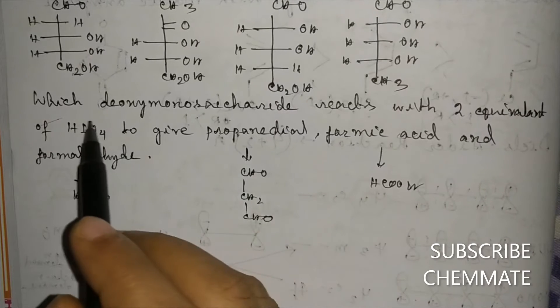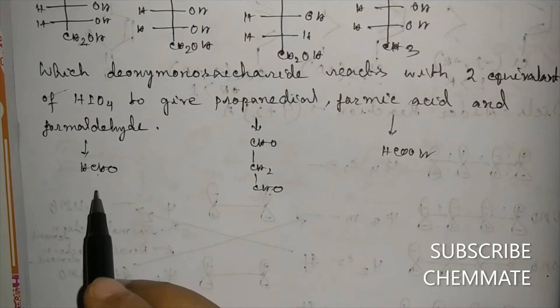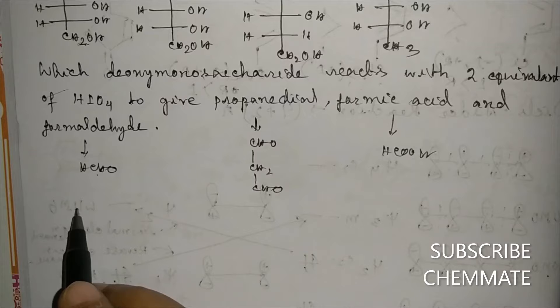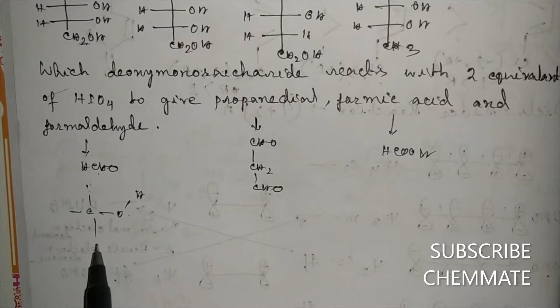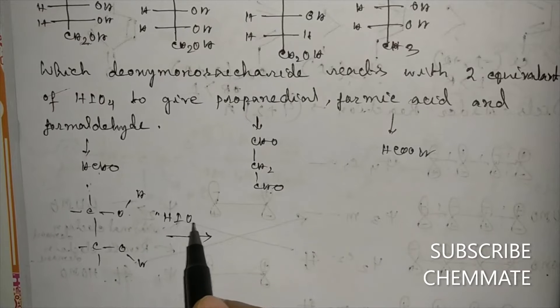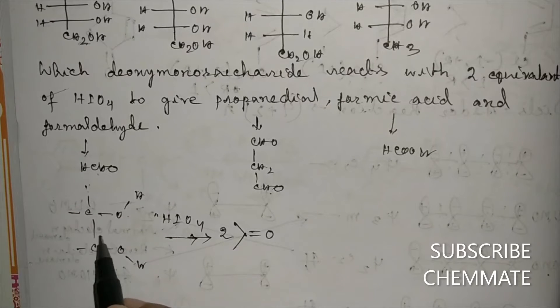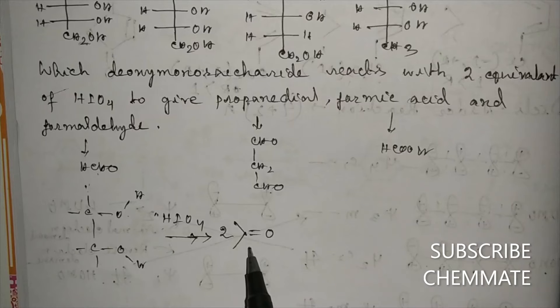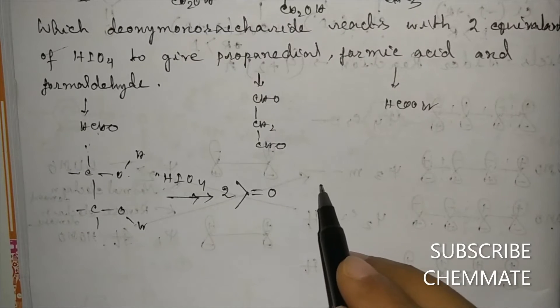Periodic acid oxidation is a very characteristic reaction of monosaccharides. HIO4 oxidizes a diol — it oxidizes the vicinal diol to give two carbonyl compounds, and it oxidizes the alcohol to aldehyde or ketone. Now let's look at the mechanism.